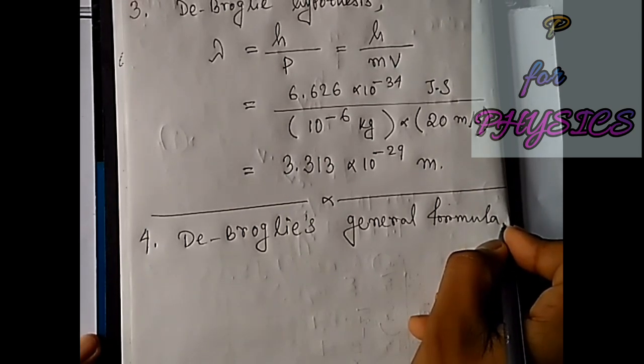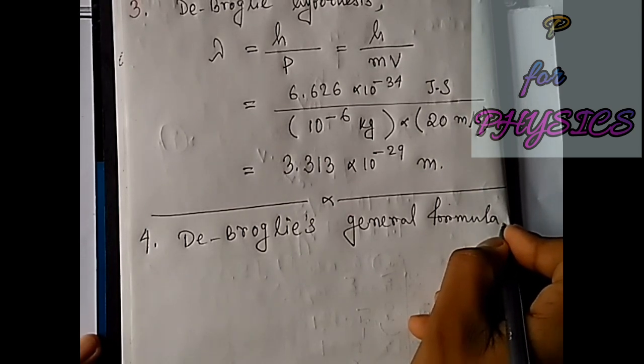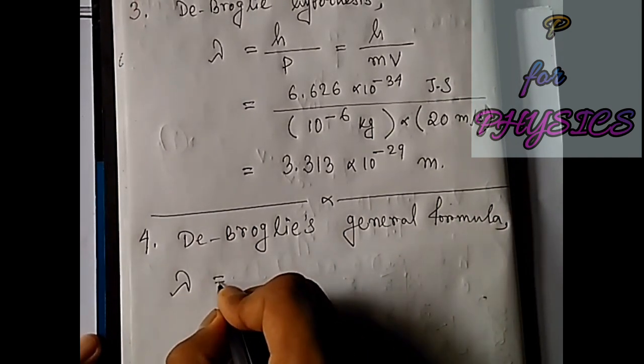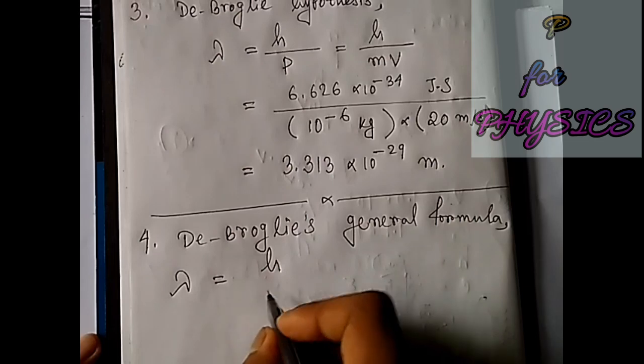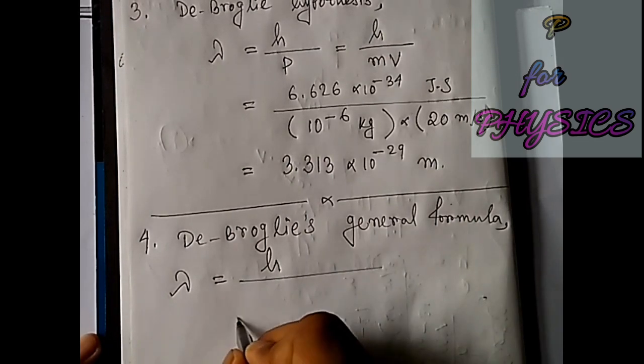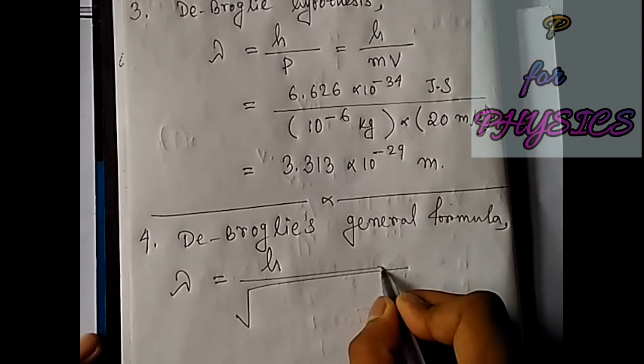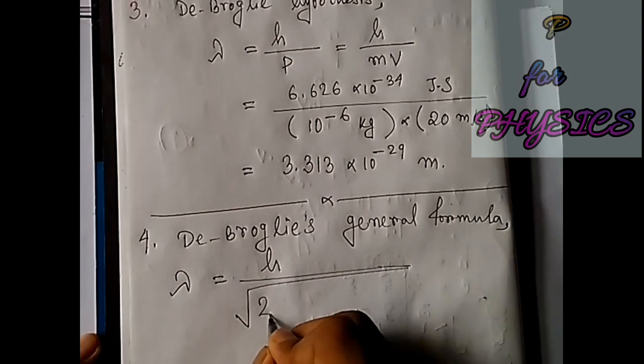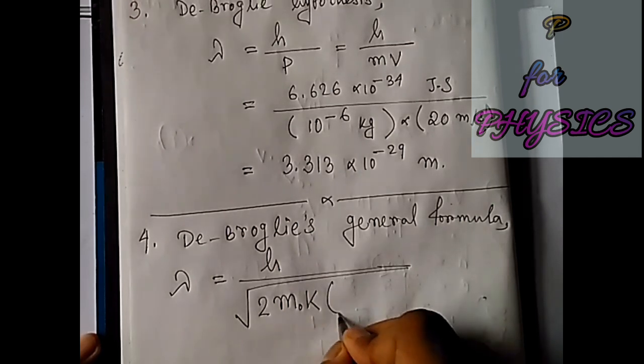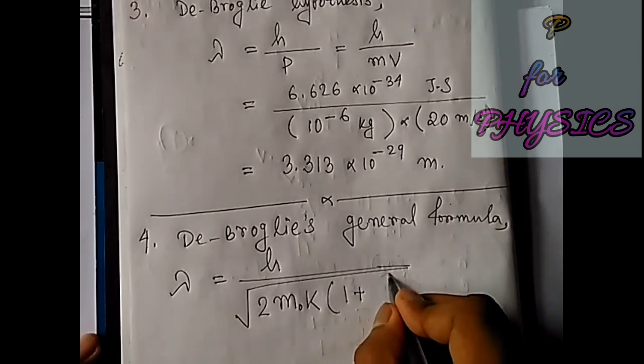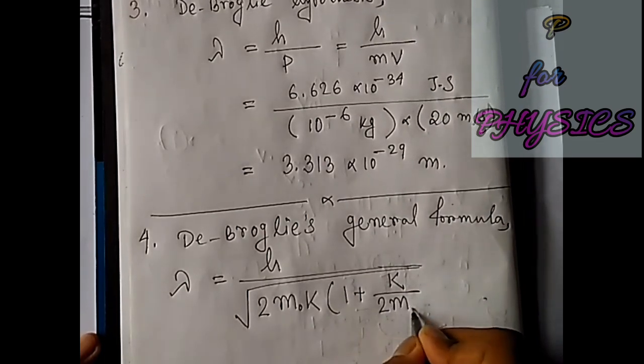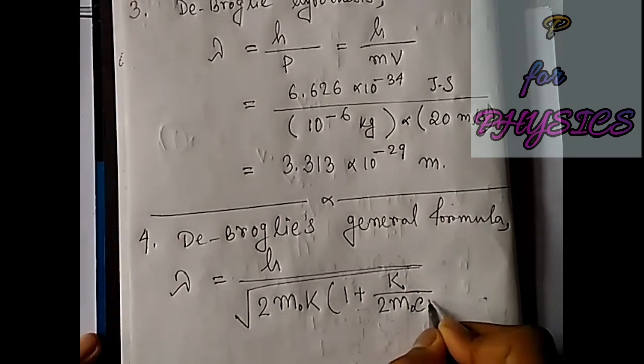So the formula is something like this: lambda equals h divided by the square root of 2m₀K times (1 plus K divided by 2m₀c²).